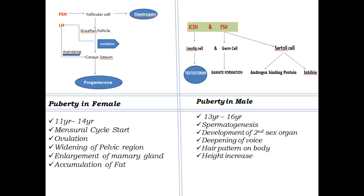Other female puberty changes include enlargement of the mammary glands and breasts, and accumulation of fat in the thigh and hip regions. These are the changes that occur in females.